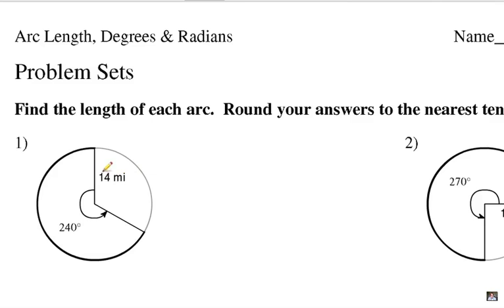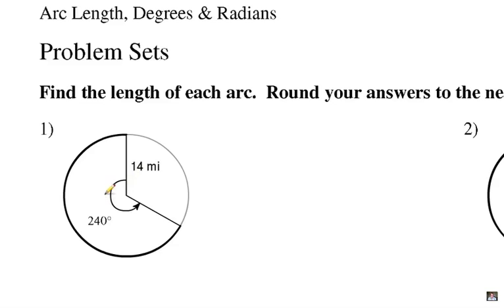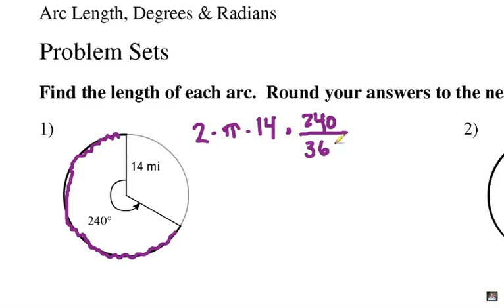Alright, in number one, the radius is 14 miles, and we have a 240 degree angle. So, of course, we're talking about the actual curved length here of this arc. Alright, so the entire circumference is 2πr, so that's 2 times π times 14 miles. And then we're going to multiply it by the central angle, which is 240 divided by 360. Alright, so we're going 240 degrees around a 360 degree circle.